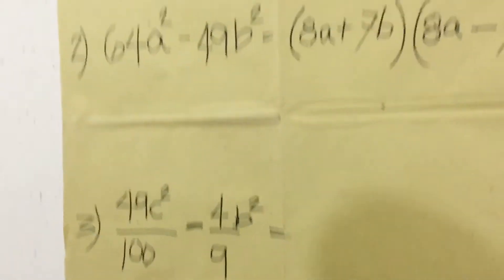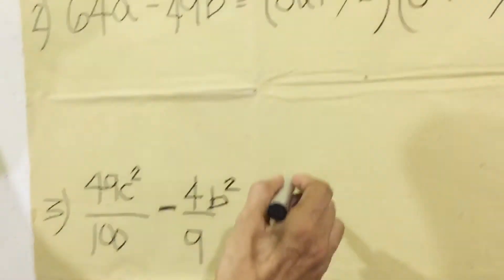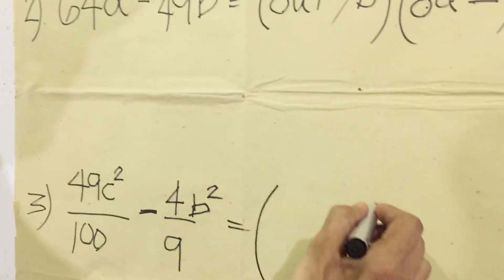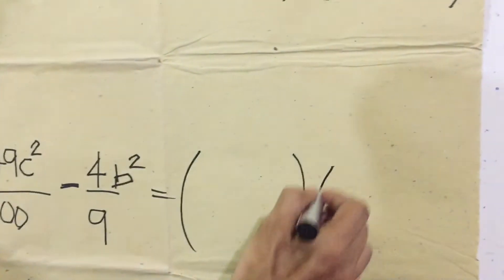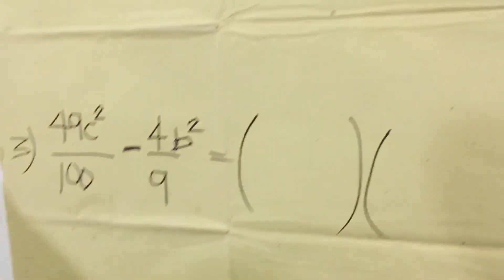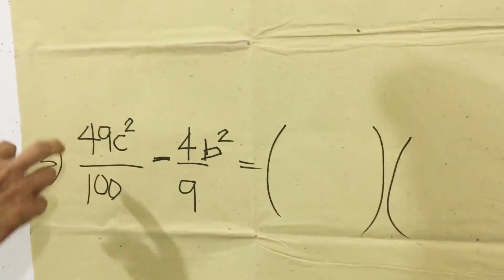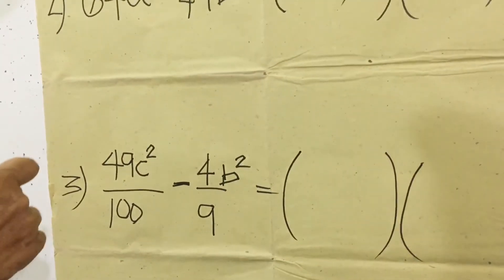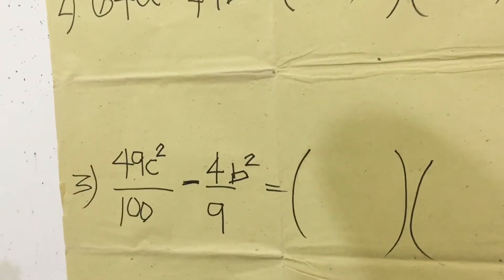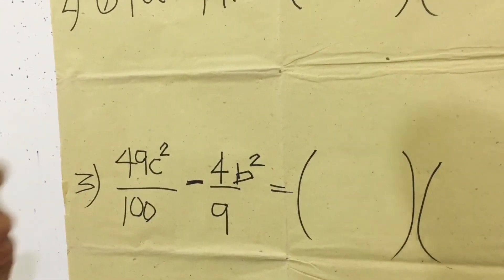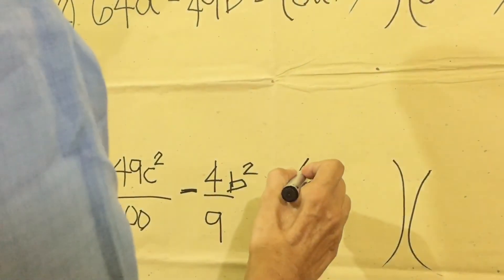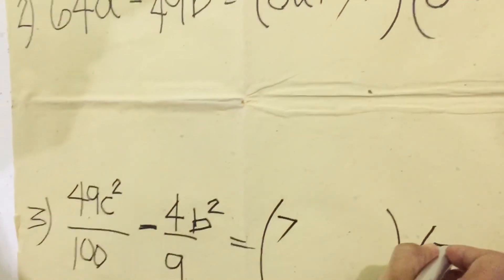And last, the same process. We have to make first two parentheses. And find the factor of 49, or the square root of 49 is 7, so 7 times 7 is 49. So 7 here, then 7.